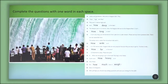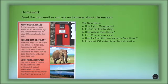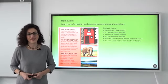So I've read all the conversation instead of listening, and we put the words in the gaps. And as homework, you're going to read the information and ask and answer about dimensions. You can see the text on the screen. You also have it in your student's book. The first one is on the screen, so you're going to continue with the African elephant and Loch Ness, Scotland. This is all for today. See you in the next class.